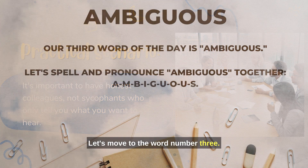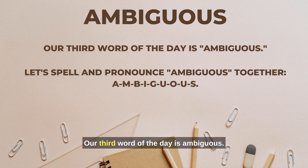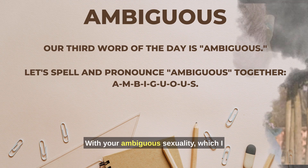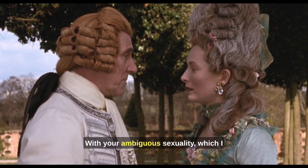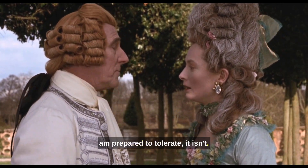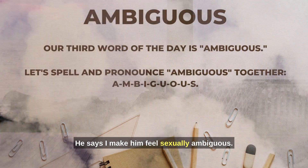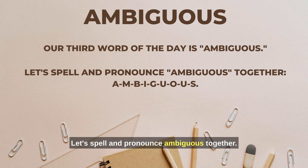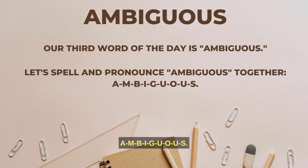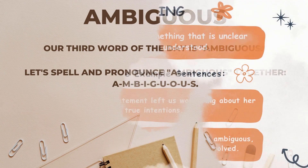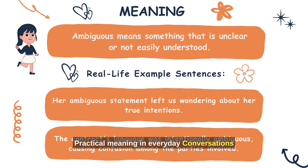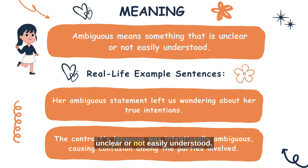Let's move to word number three. Our third word of the day is ambiguous. 'With your ambiguous sexuality, which I am prepared to tolerate.' 'He says I make him feel sexually ambiguous.' Let's spell and pronounce ambiguous together: A-M-B-I-G-U-O-U-S. Ambiguous. In everyday conversations, ambiguous means something that is unclear or not easily understood.